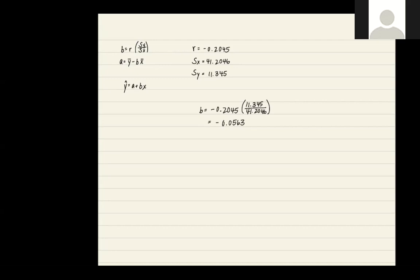Now we can use that to find our a value. First we need our y bar, which we calculated earlier as being 32.4. And then we're going to subtract our b value that we just calculated. But first we need to multiply our b value to our x bar, which in this case is 1424.4. So this is going to give us a as equaling 112.622, which means our final regression equation is y hat equals 112.622 minus 0.0563 x.